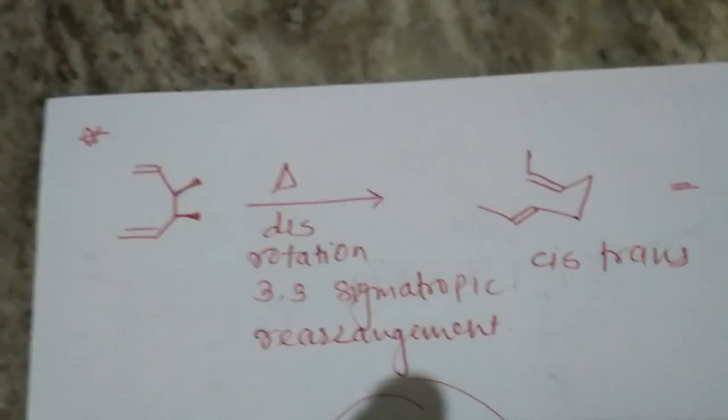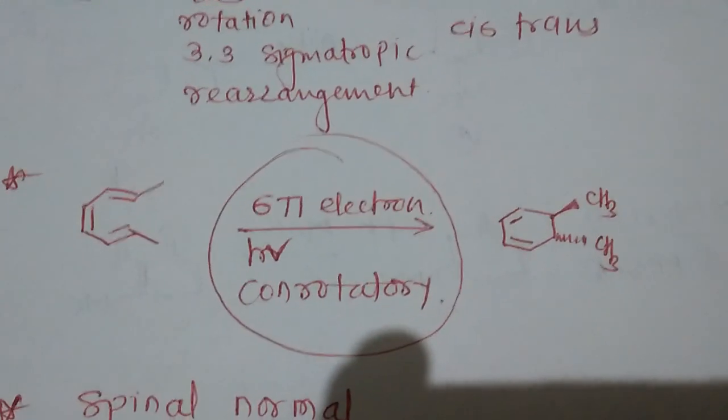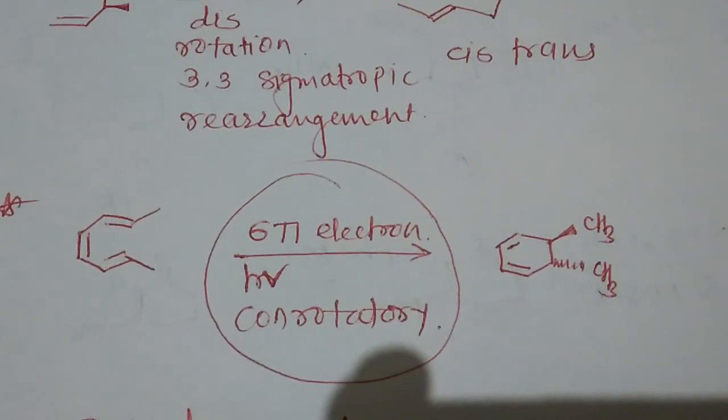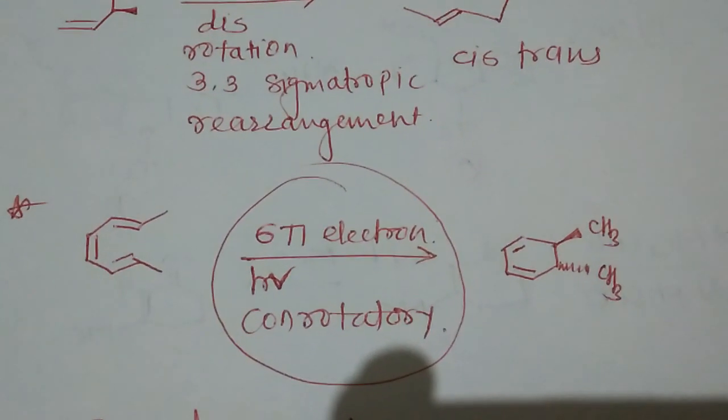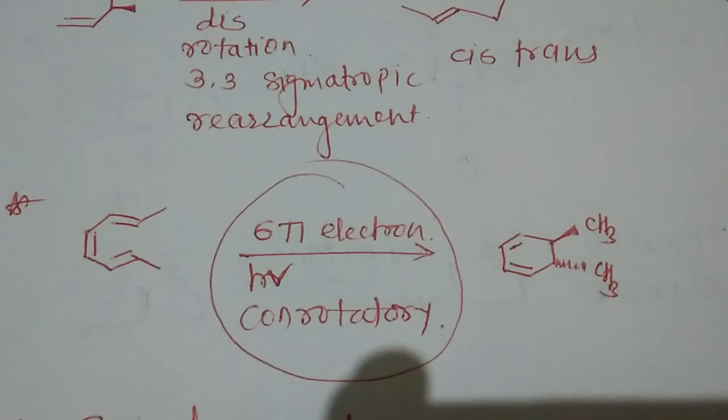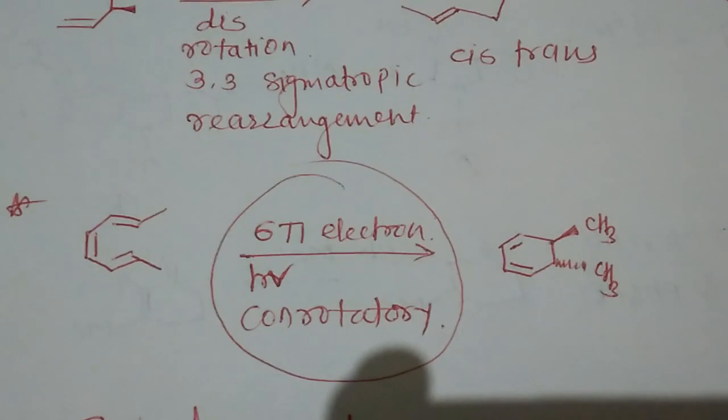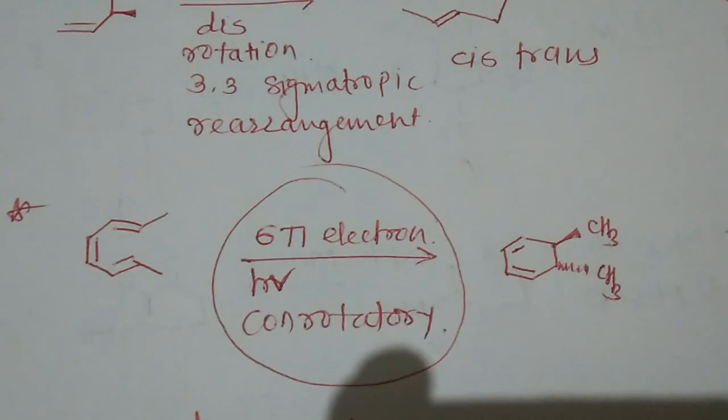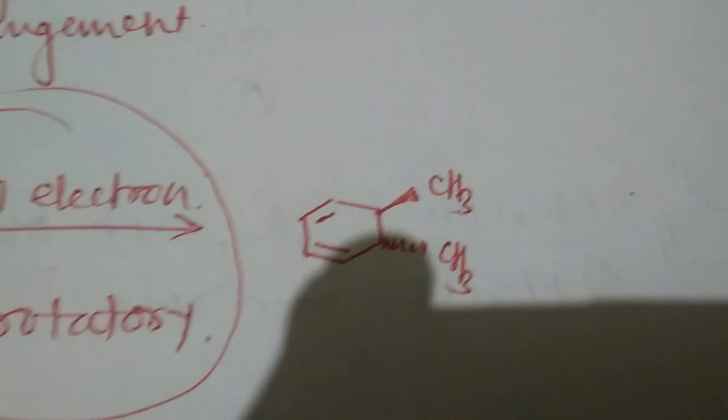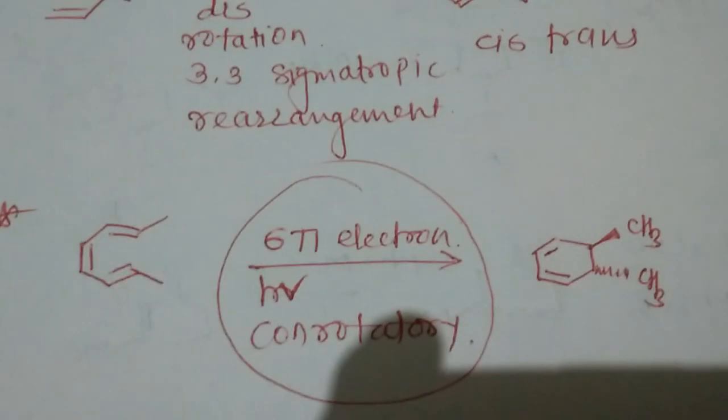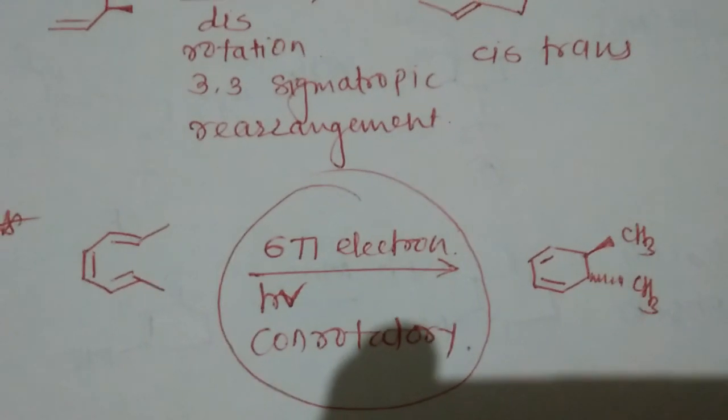Let's move to the next question. A ring-closing electrophilic cyclization where 6 pi electron will always give this expected product in presence of photo light and conrotation. Whenever it happens, this product will form. So this is the correct option.